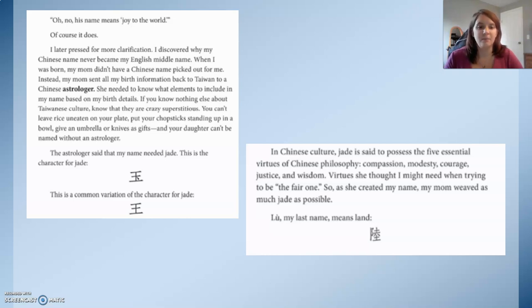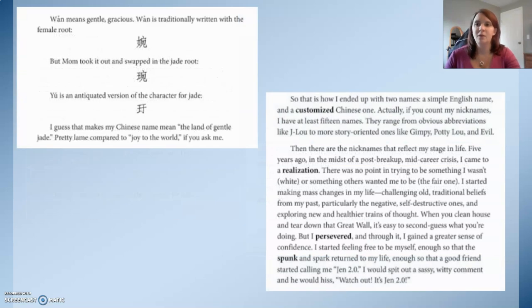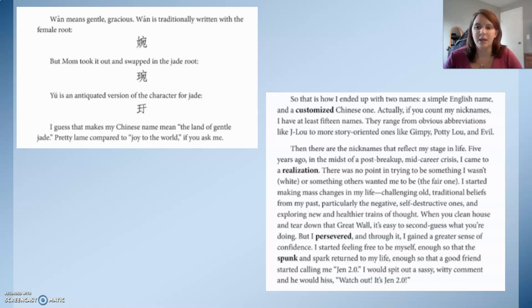So my mom weaved as much jade as possible into my name. Lu, my last name, means land. Wan means gentle and gracious — traditionally written with a female root, but my mom swapped in the jade root. Yu is an antiquated version of the character for Jade. That makes my Chinese name mean the land of gentle Jade — pretty lame compared to Joy of the World, if you ask me.